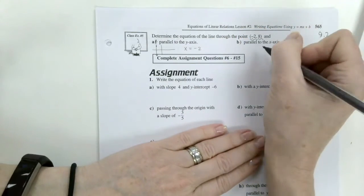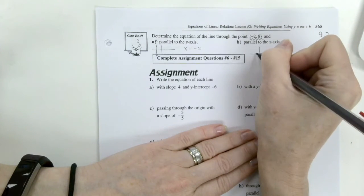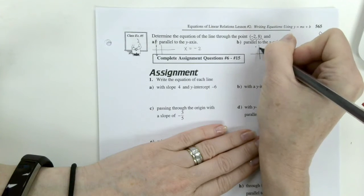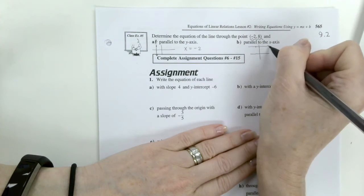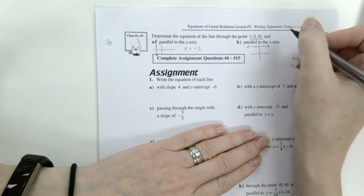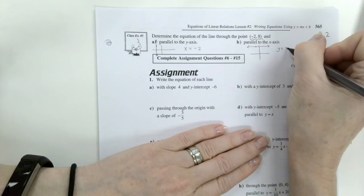Parallel to the x-axis. So if we draw a little sketch. Here we are at negative 2 and up 8. Parallel to the x, we'll be going horizontally. Horizontally, we know is a y equals. And how high is that line? It's up 8.